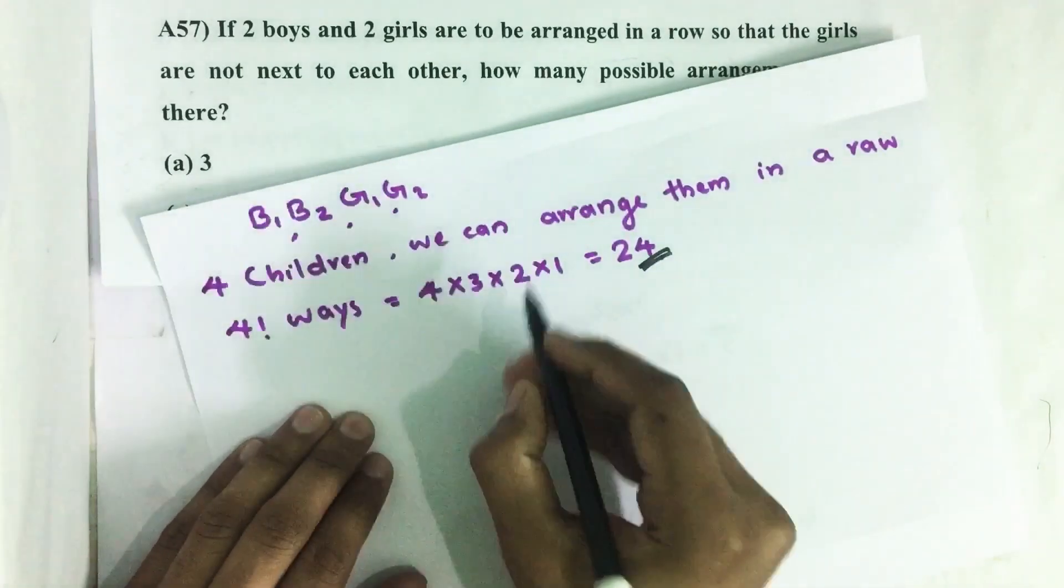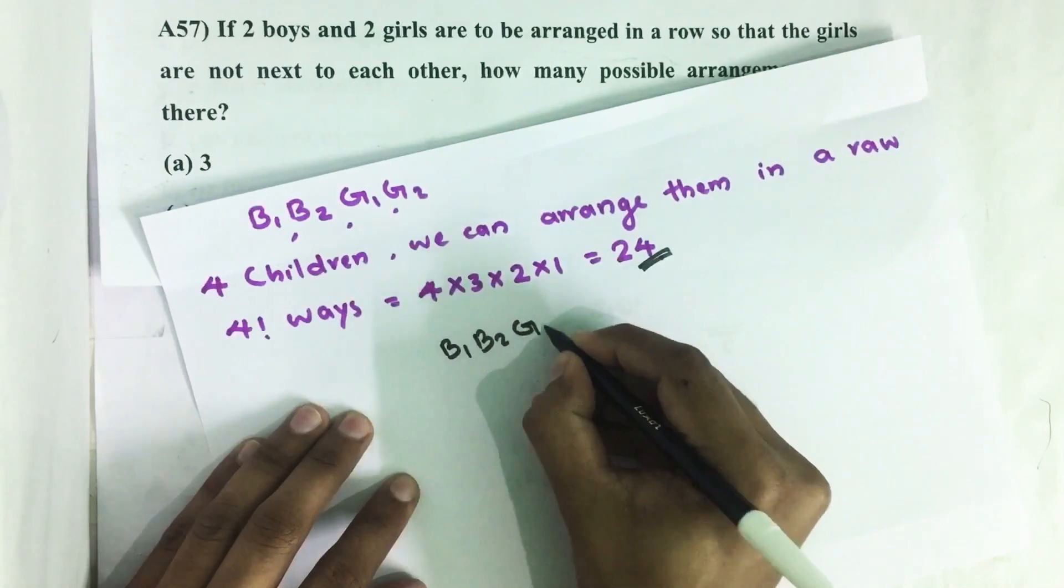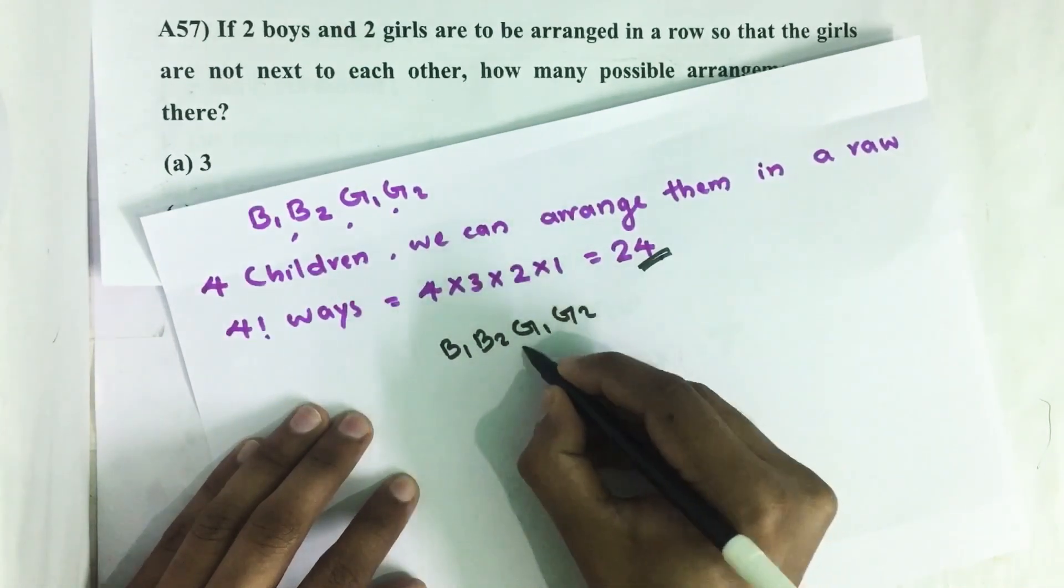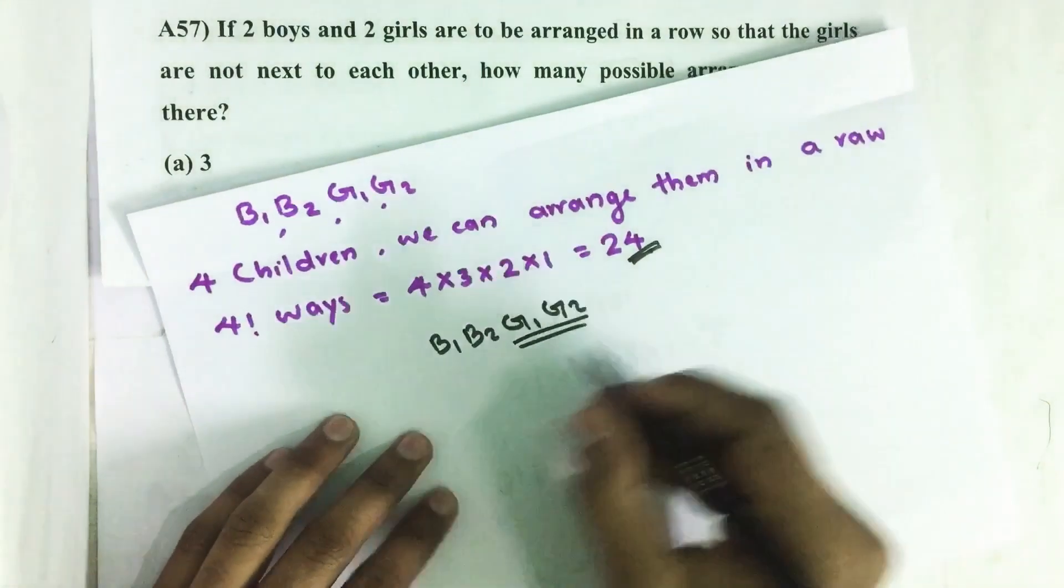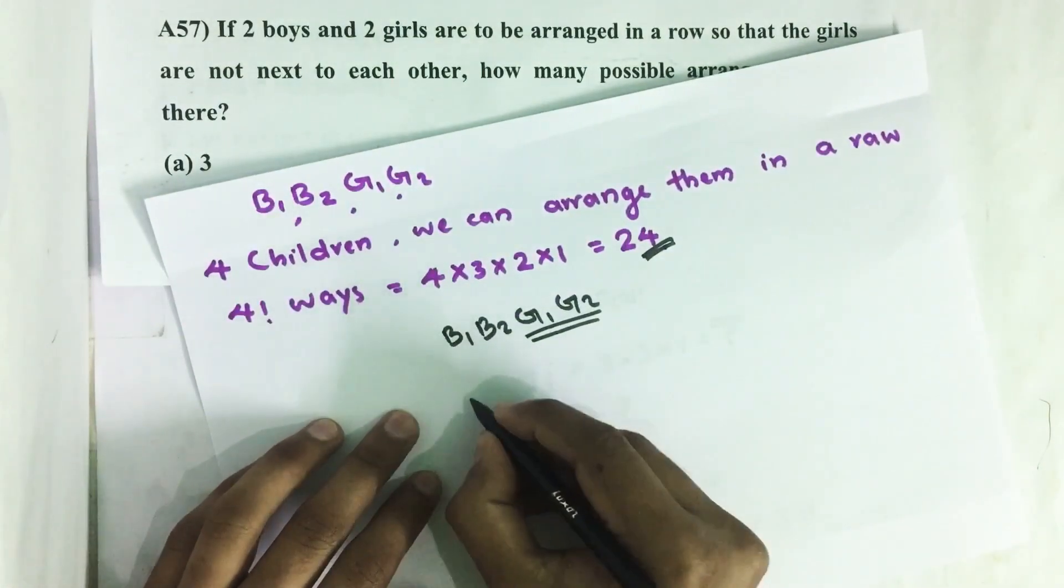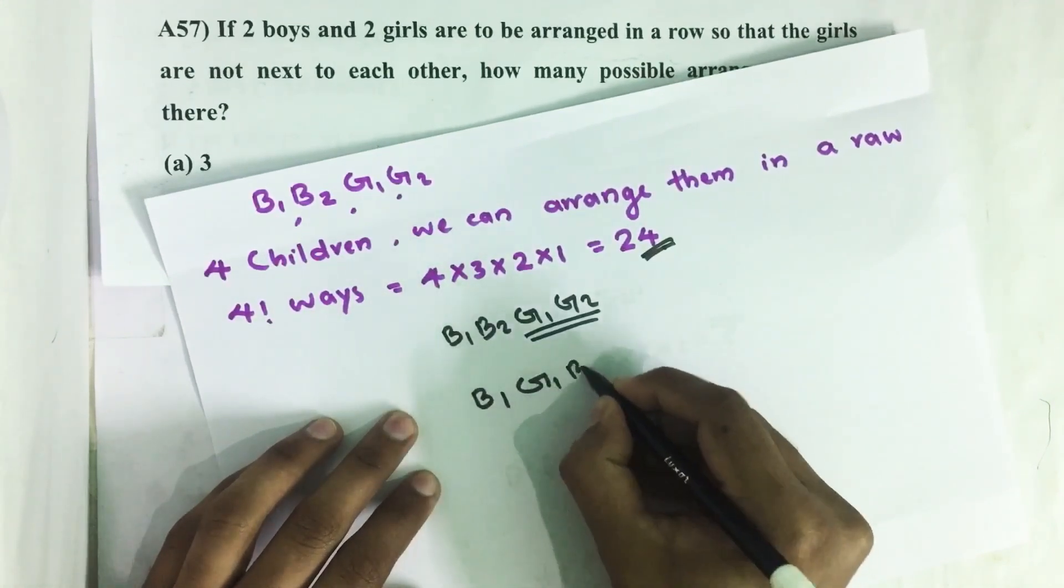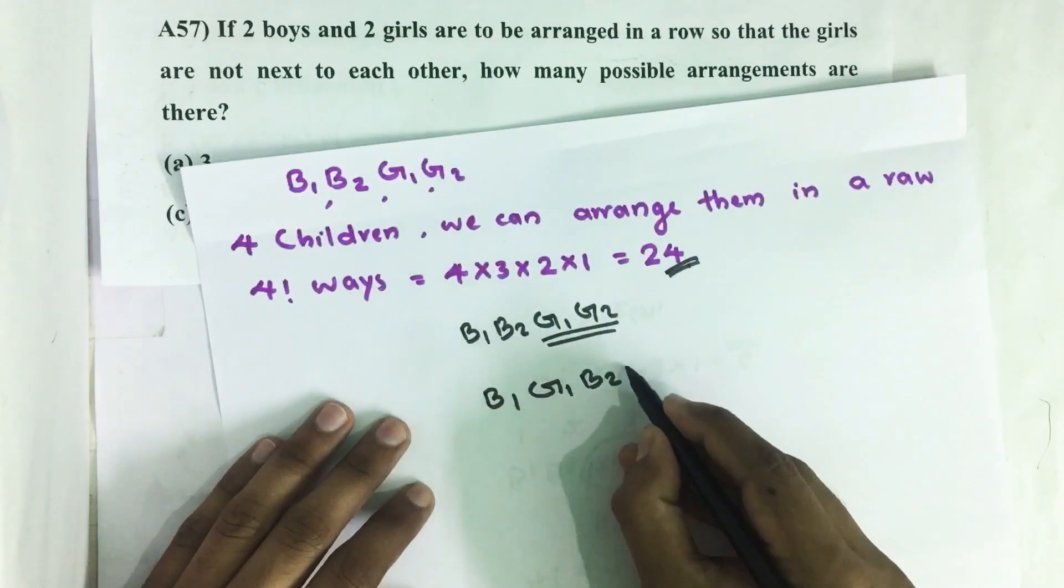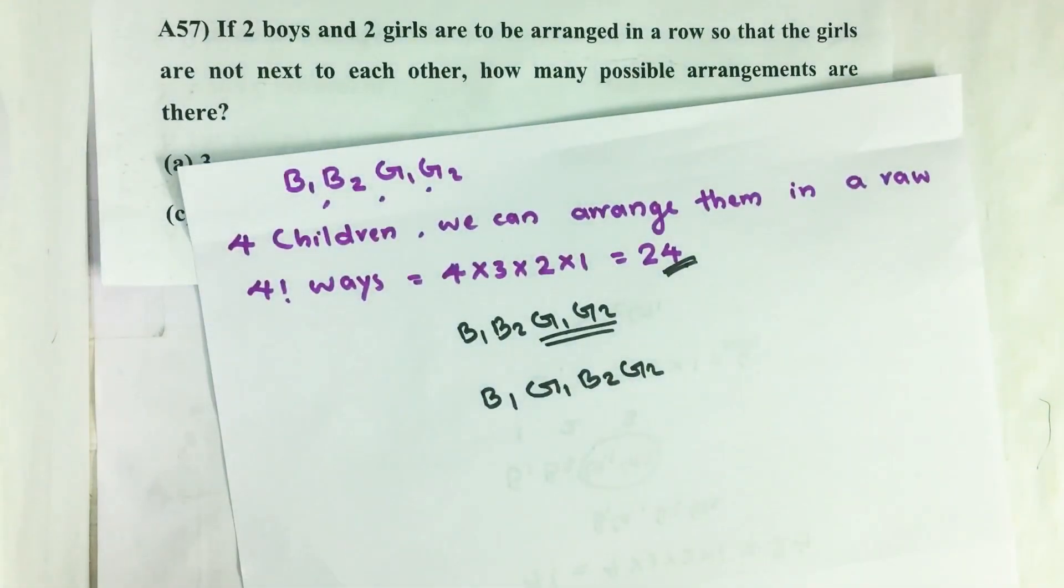That means arrangement like B1, B2, G1, G2, where girls are next to each other, such kind of arrangements are not allowed.